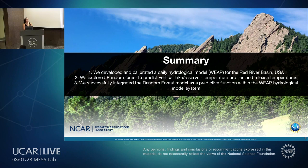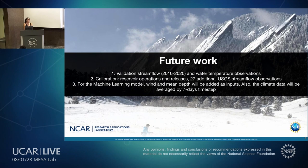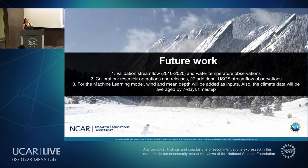To summarize: first, we developed and calibrated a daily hydrological model, WEAP, for the Red River Basin. We also explored random forests to integrate machine learning into the WEAP ecosystem and successfully integrated this model into the hydrology for water management and planning. For future work, there is a lot to do: validation of stream flows using the period 2010 to 2020, validation of the water temperature machine learning model, calibration of all 38 reservoirs, calibration of additional stream flow gauges, and improvement of the machine learning model by adding variables like wind and mixing depth, and averaging climate variables over a seven-day time step.